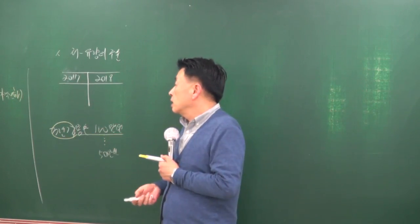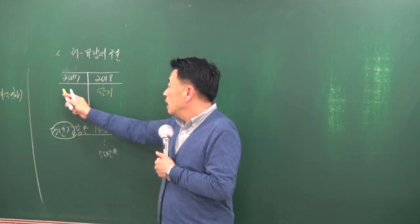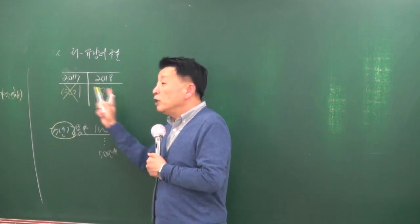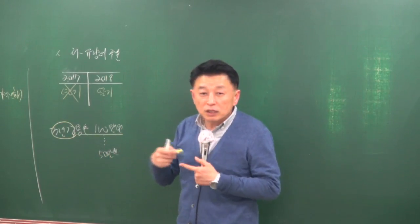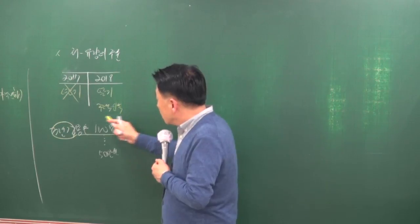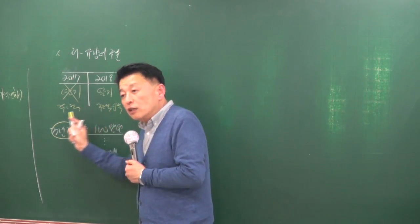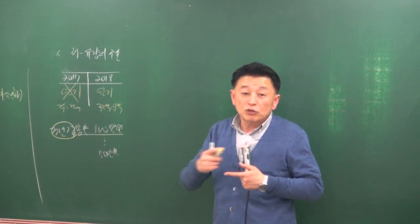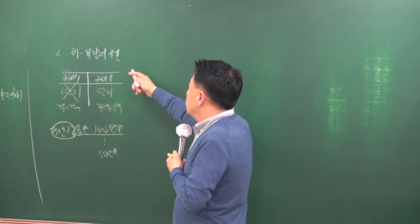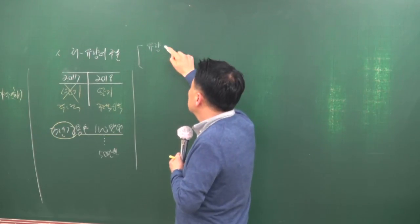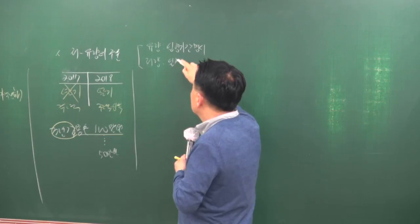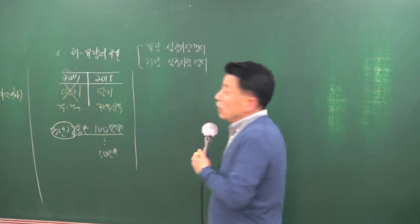딸기는 소모성 재화라 해마다 새로 공급되므로 어느 해에 얼마나 공급됐는지 기간이 명시되어야 합니다. 반면 부동산은 수명이 긴 재화로 작년에 공급된 주택도 시장에 그대로 남아 있습니다. 따라서 부동산은 유량뿐만 아니라 저량도 파악해야 합니다. 유량은 기간이 명시될 때, 저량은 시점이 명시될 때 의미가 분명해집니다.